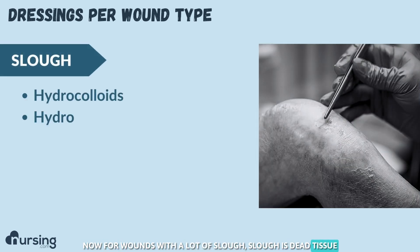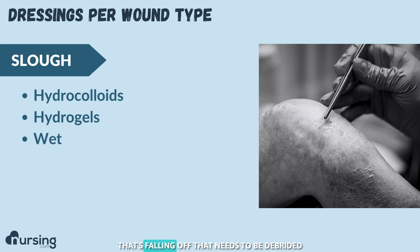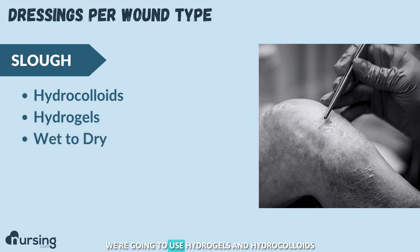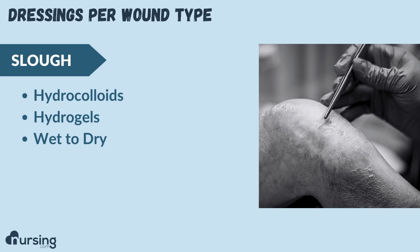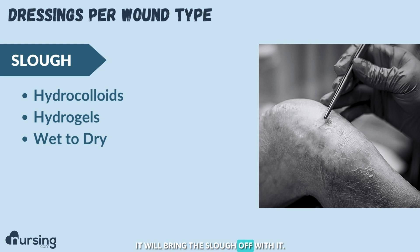For wounds with a lot of slough — slough is dead tissue that's falling off and needs to be debrided — we're going to use hydrogels and hydrocolloids, and we'll also often use simple wet-to-dry dressings. As that wet gauze dries, it brings the slough off with it when pulled from the wound.